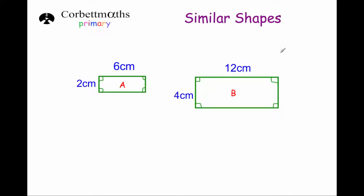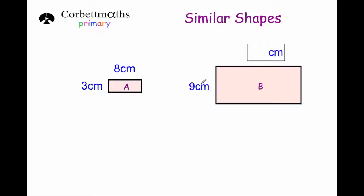So let's have a look at some questions now. Here we've got two rectangles and they're similar to each other, so that means one is an enlargement of the other. The question has asked us to find this measurement here — the length of rectangle B. If we look at the widths, the width of rectangle A is three centimetres and the width of rectangle B is nine centimetres — that is three times larger.